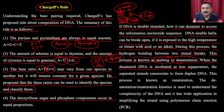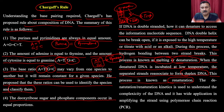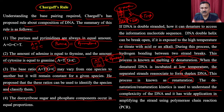When the denatured DNA is incubated at low temperature, the separated strands re-associate to form duplex DNA. This process is known as renaturation. When you heat DNA, the hydrogen bonding between bases breaks and the strands separate; when you lower the temperature, it renatures. This concept of denaturation and renaturation kinetics is used effectively in a technique called polymerase chain reaction (PCR) and to understand the complexity of DNA.